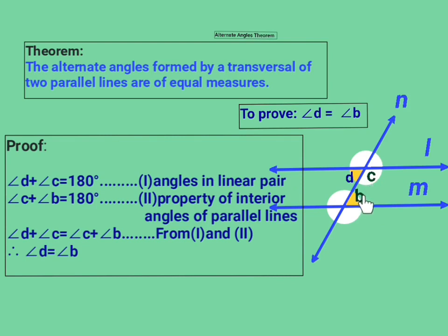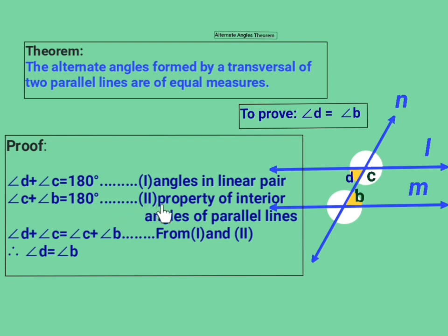Now, angle C and angle B are interior angles. By the property of interior angles of parallel lines, their sum is 180°. So we can write angle C plus angle B equals 180°. This is equation number two, and the reason is: the property of interior angles of parallel lines.